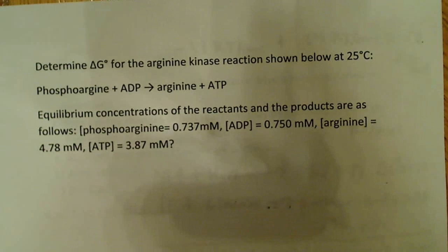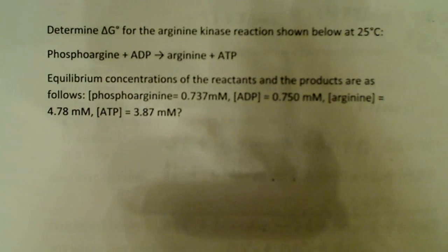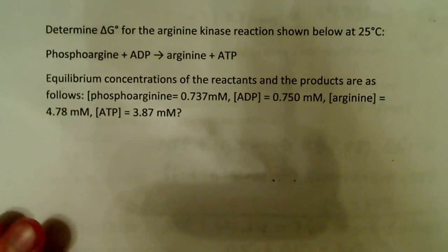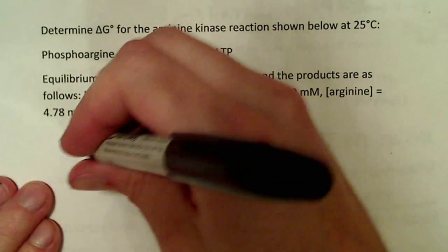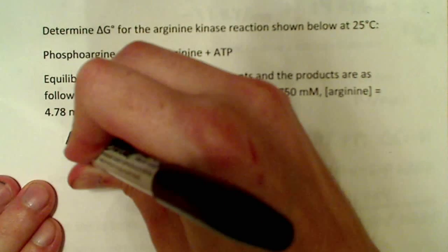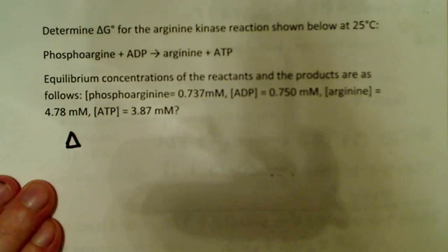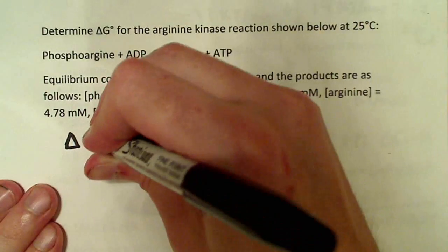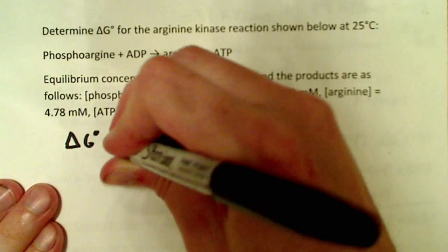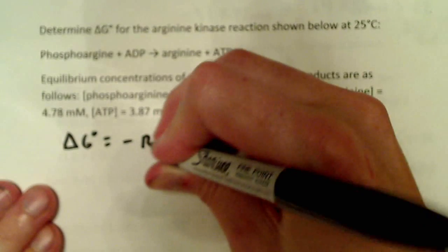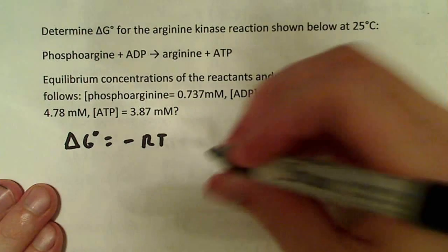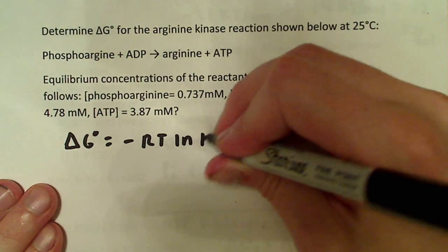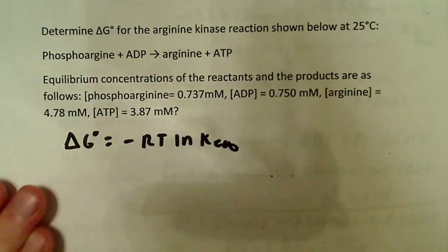The first thing you want to do with a problem like this is think about what equation you're going to use to solve it — so you know what variables you need, what you have, and what you need to solve for. The equation is: delta G standard, the standard free energy change, is equal to negative RT times the natural log of K-eq. That's the equilibrium constant.